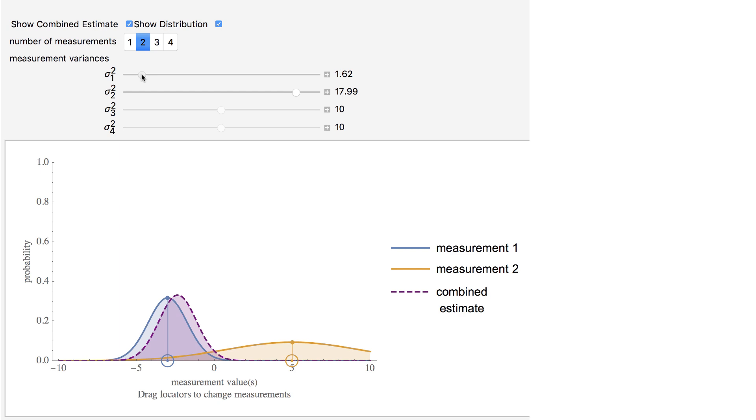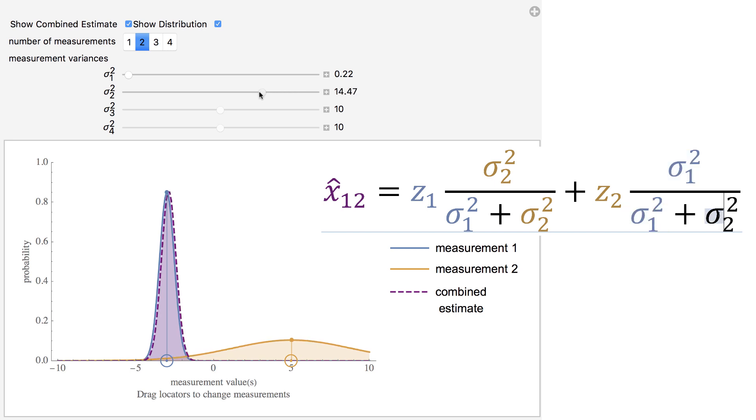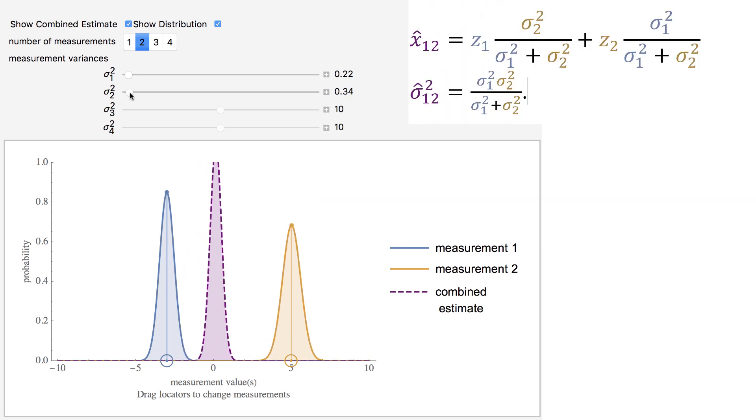What we do is take the weighted average of the measurements based on their standard deviation. You can see if I make this standard deviation tiny, the combined measurement is going to be almost exactly on top of that measurement. If the other measurement was also similarly accurate, then the combined estimate is moved somewhere in between these two.